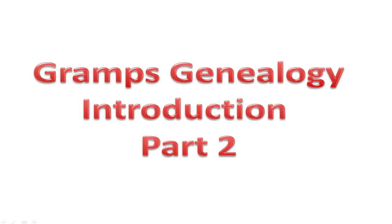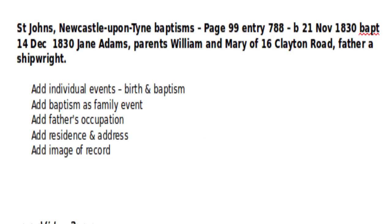Hello again. This video continues where we left off in basics video number one. Here is the next line in my journal — it's a baptism for the couple we have just seen married. In Gramps, I need to add an individual (the child) to the database, then add birth and baptism as separate events. We can add to the family the fact that they took part in a baptism. I can add a father's occupation, put in their address, and as I took a picture of the register I can include the image as part of that event. So let's go and do that now in Gramps.